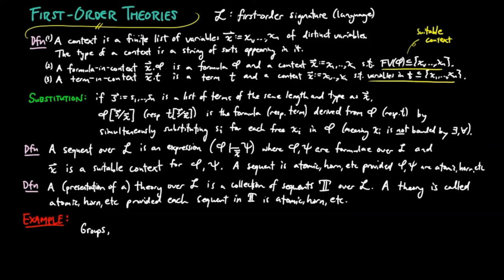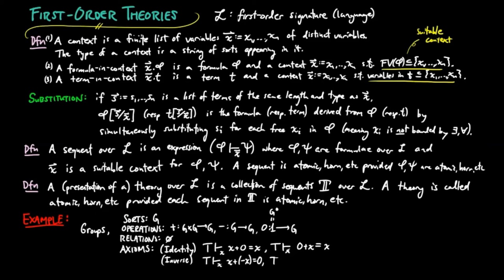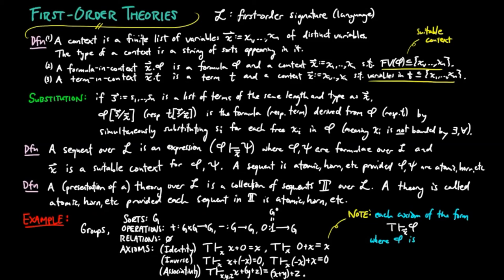So, for example, the signature of groups has an axiom system consisting of the identity law, the inverse law, and the associativity law, given here. Note that all of these axioms can be written as truth implies phi, where phi is atomic.